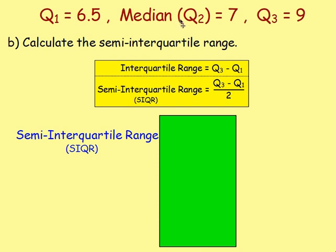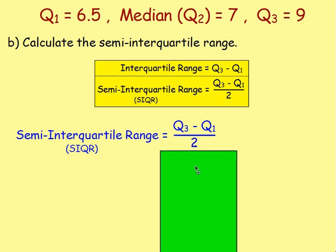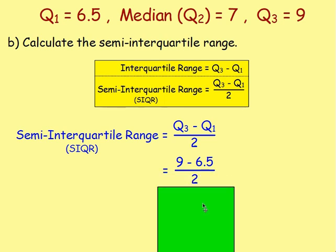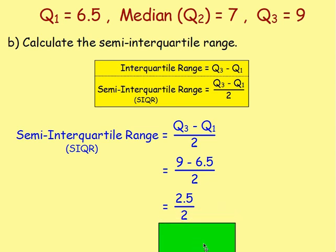So we found Q1 to be 6.5, the median to be 7, and Q3 to be 9. For part B we want to work out the semi-interquartile range. Remember the interquartile range is Q3 take away Q1, and the semi is when you halve it — so it's Q3 take away Q1, divided by 2. Putting these numbers in: 9 take away 6.5 gives us 2.5, and 2.5 divided by 2 gives us 1.25. So the semi-interquartile range is 1.25.